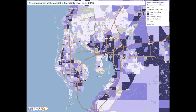Breaking it out by socioeconomic status, this includes the population below the federal poverty level, the unemployed population, per capita income, and population with no high school diploma. In Policy Map, you can pan, zoom in and out, and view this data all the way down to the census tract level.